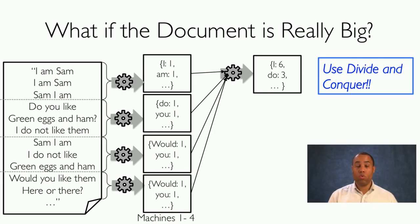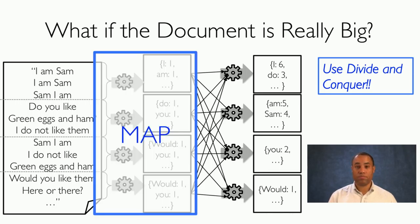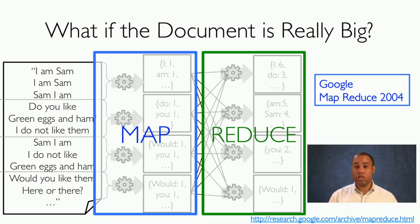Instead, we could use divide and conquer. We take our document, partition it, and process it individually on machines one through four. Then all of the machines send their counts for each word to a designated machine — counts for "I" to one machine, counts for "do" to another, and so on across all words, partitioned across the machines. In fact, these could be the same machines one through four. Now our result is also partitioned across multiple machines. This first step of counting all the words is a map; combining all of those results is a reduce. This is what Google wrote about in 2004 in a research paper.